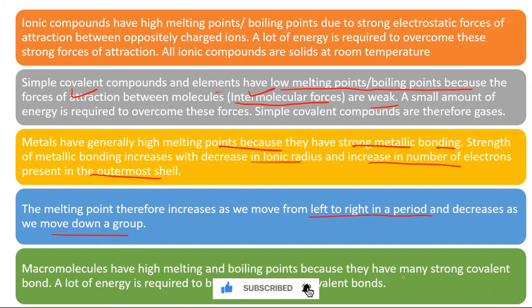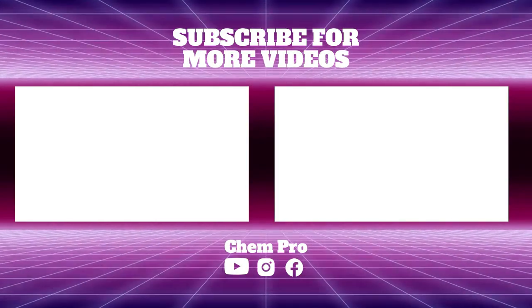Macromolecules have high melting points because they have many strong covalent bonds, and a lot of energy is required to break these strong covalent bonds.